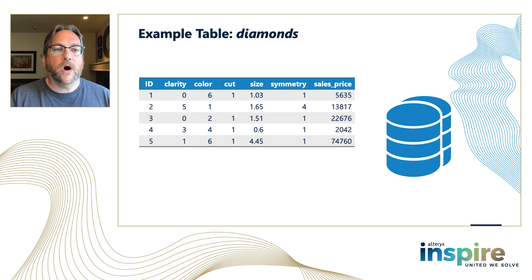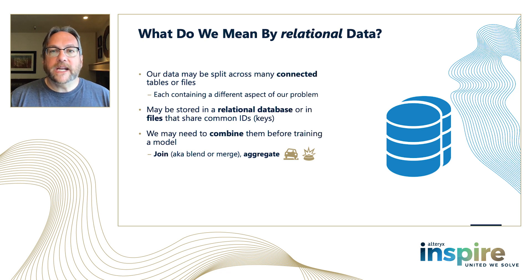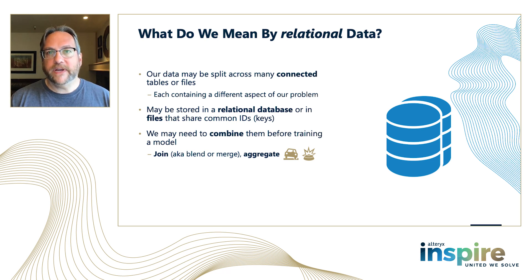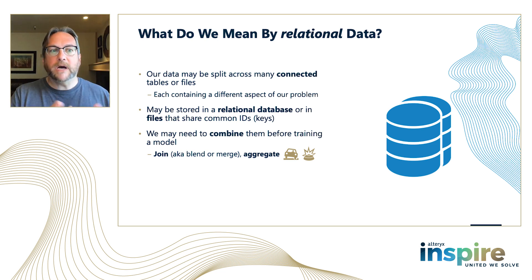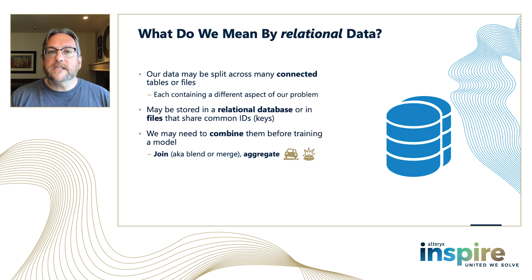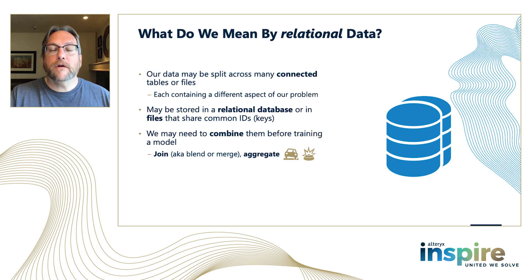Often in our business situation, we have what's called relational data — more than one table that's connected in some way. Our data may be across a number of tables and files, each containing a specific aspect of our problem, but connected through some identifiers. I might have a customer ID, might have a store ID — things like this. I'll have a lot of information about a customer or a store, and all of these different data sources are connected by these IDs. It doesn't necessarily mean the data is in a relational database — I can also have data in files — but they're connected through these IDs. We may need to combine, join, merge, or blend these and aggregate data.